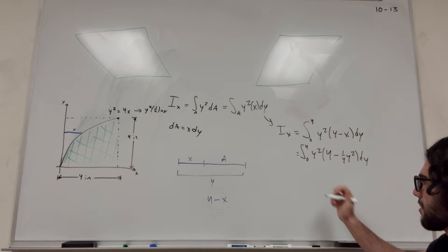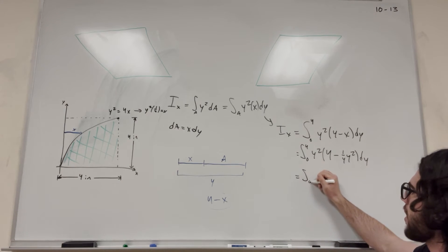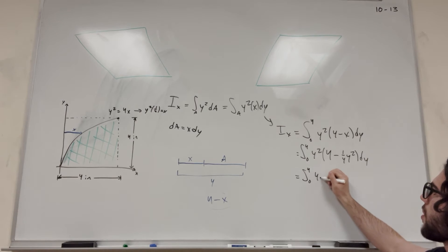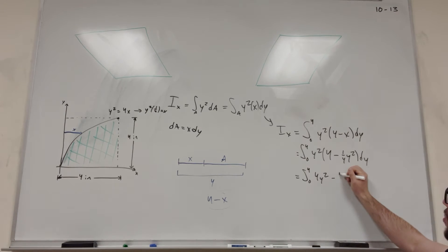Now we just have to solve this integral, which is going to be pretty simple. Let's expand out everything. So it's going to be 4y squared minus 1 over 4 y to the 4th dy. Do this integral, you get 4 thirds y to the 3rd minus 1 over 20 y to the 5th from 0 to 4.